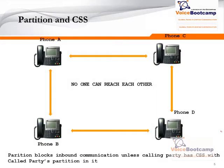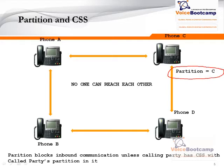Now, let's assume I'm going to create a partition which blocks inbound communication unless the calling party has a CSS. In this scenario, I have put phone C into partition C. Because I have broken the normal behavior of null partitioning and null calling search space, at this stage phone A can no longer dial phone C, because phone A does not have a calling search space with partition C yet.